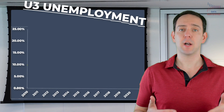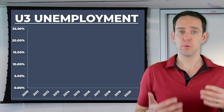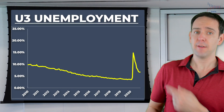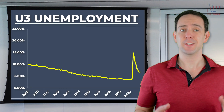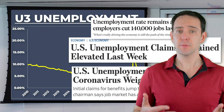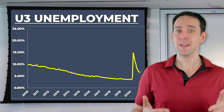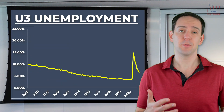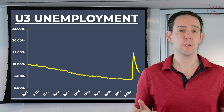The one most commonly reported, U3 unemployment, the one shown in this graph and blasted all over the news media, is just one and perhaps not even the most appropriate way that unemployment can be reported.